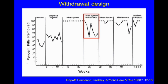We then introduced the originally planned intervention: a token system where he earned points for taking his medications, which he could trade in for special privileges. His adherence jumped to 100% during the first token system phase. The red box shows the withdrawal of the token system — that's the control element — and once withdrawn, adherence dropped. When reinstated, adherence increased again. During the maintenance phase, he had to maintain adherence above 80% or we would have reinstated the token system. That never happened, and his adherence remained relatively high. At a nine-month follow-up, he had very good adherence.